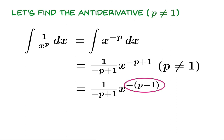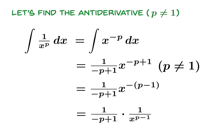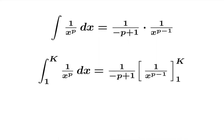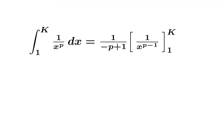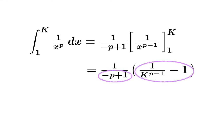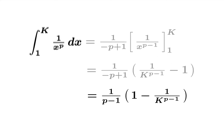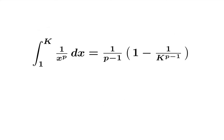Rewriting the exponent, we can express the antiderivative as 1 over (negative p plus 1) times 1 over x to the p minus 1. We want to evaluate this as a definite integral, so we plug in k and 1 and subtract. When we do that, we get an expression which, for convenience, we rewrite by switching both signs — giving an equivalent expression for our definite integral from 1 to k.